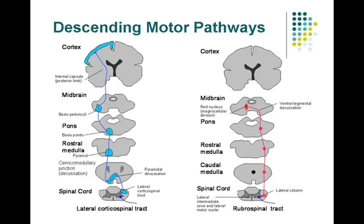Today we will be discussing the descending tracks, or what we call the motor tracks. If you look at the motor tracks, we had discussed sensory tracks, and by now you are well aware what a track is. It consists of neurons that synapse and form a kind of a pathway. For sensory, it starts from the first order neuron containing the receptor at the terminal end and ends with the fourth order neuron.